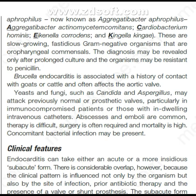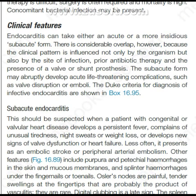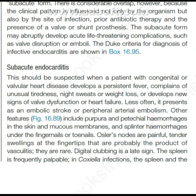Endocarditis can take either an acute or a more insidious subacute form. There is considerable overlap, because the clinical pattern is influenced not only by the organism but also by the site of infection, prior antibiotic therapy, and the presence of a valve or shunt prosthesis. The subacute form may abruptly develop acute life-threatening complications such as valve disruption or emboli. The Duke criteria for diagnosis of infective endocarditis are shown in the box.